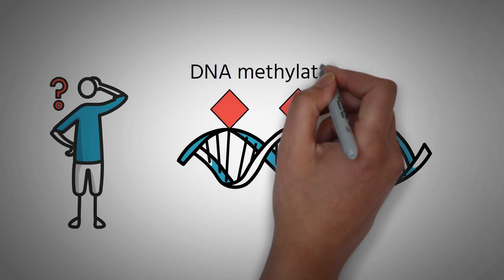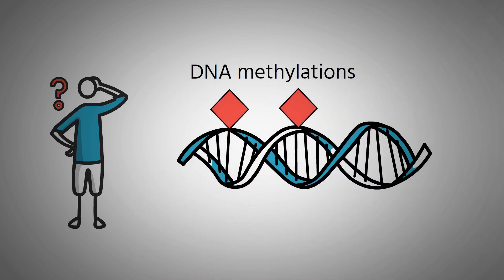Those changes are called methylations and act as little tags on the DNA that control what genes should be read and which should be skipped.